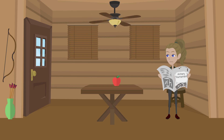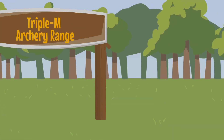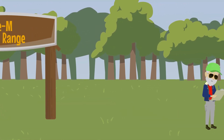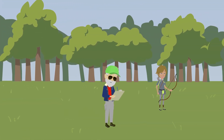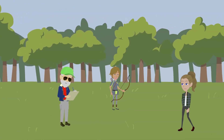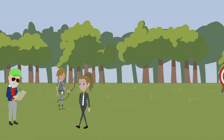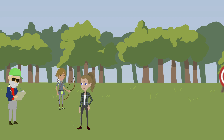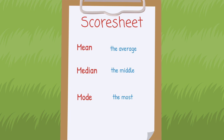There's an archery tournament this weekend. How exciting! Hi, I'd like to sign up for the tournament. Of course, there's a $5 entry fee. Let me explain the rules of our tournament. There will be three competitions: the mean, median, and mode.